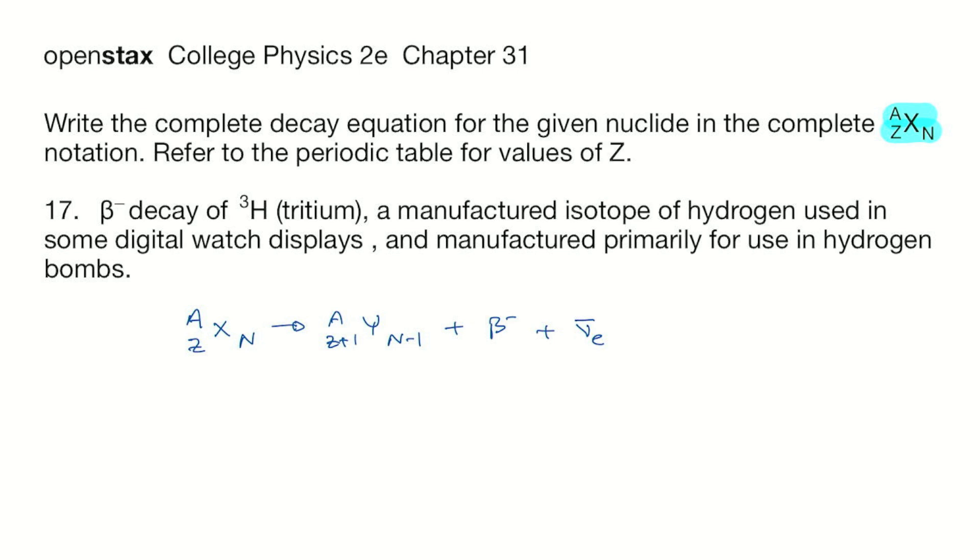So with beta minus decay, we see that a neutron decays into a proton, electron, and anti neutrino.